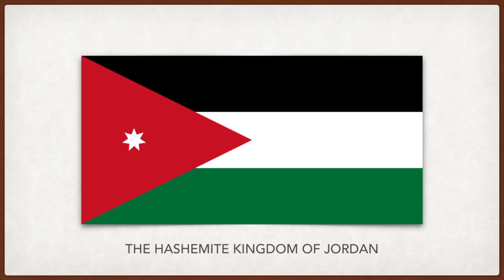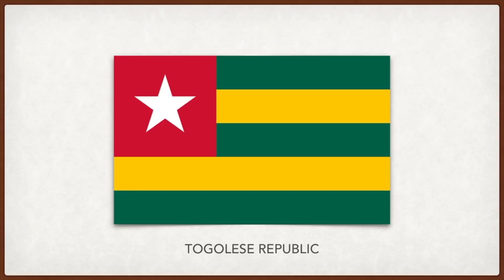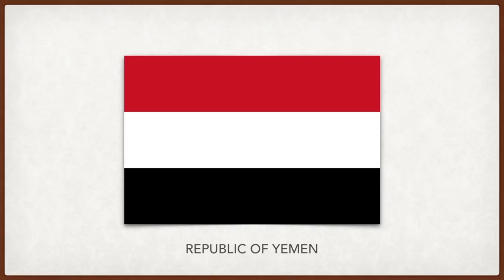Togo: red represents the blood shed by martyrs to gain independence, white represents hope — the star of hope — green represents the forest, agriculture, nature, and overall hope for the future, and yellow represents the natural resources of the country.